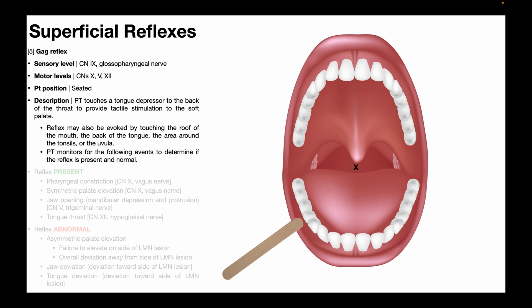In this video, we're going to be discussing the fifth of the superficial reflexes, and that is the gag reflex. The gag reflex is similar to the corneal reflex in the sense that it involves cranial nerves for both its sensory and motor components. The sensory component specifically is cranial nerve 9, the glossopharyngeal nerve. Unique to the gag reflex is that it involves multiple motor components: cranial nerves 10, 5, and 12 — the vagus nerve, trigeminal nerve, and hypoglossal nerve respectively.